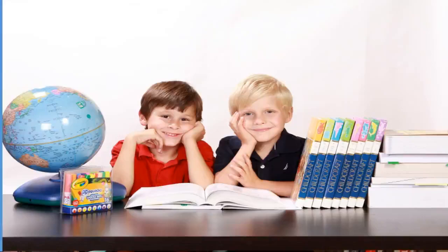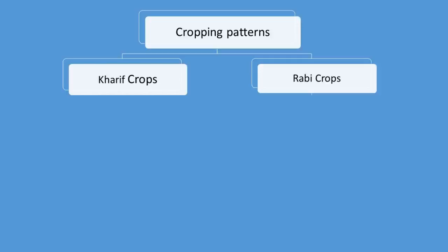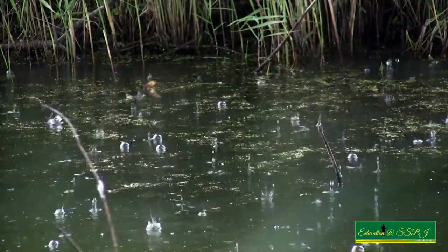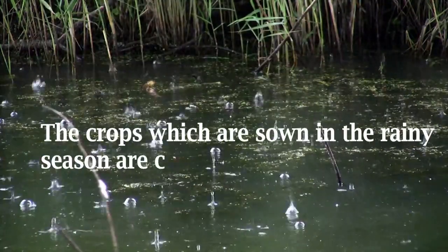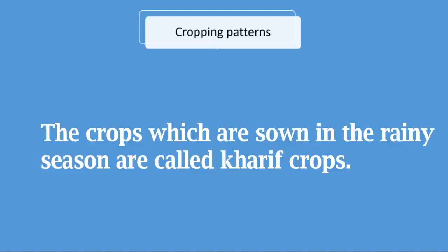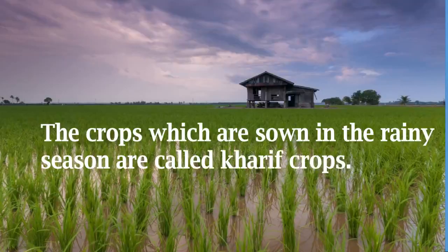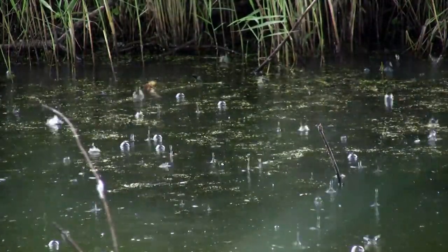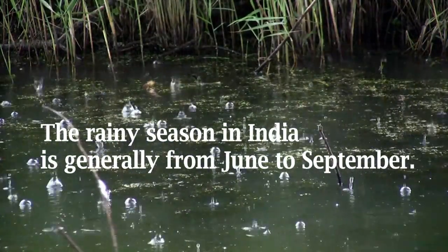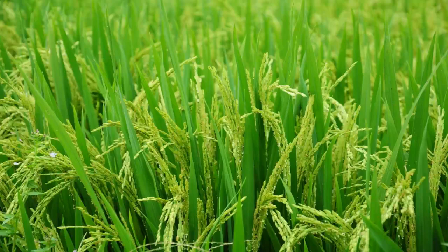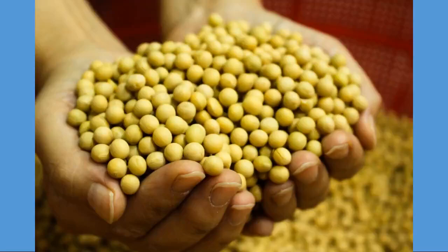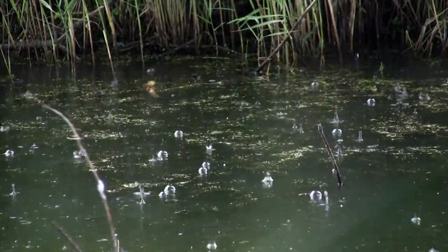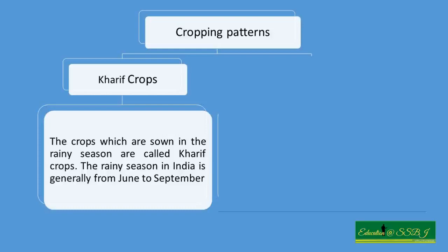You must have studied this in your geography syllabus, so let us once again recall it here. What are Kharif crops? Crops which are sown in the rainy season are called Kharif crops. Those crops require more water, and the rainy season in India is approximately June to September, though it varies slightly. Examples of Kharif crops include paddy, maize, soybean, groundnut, and cotton. They require water to grow, which is why they are grown in the rainy season.